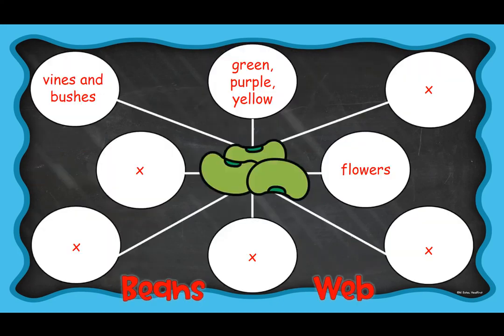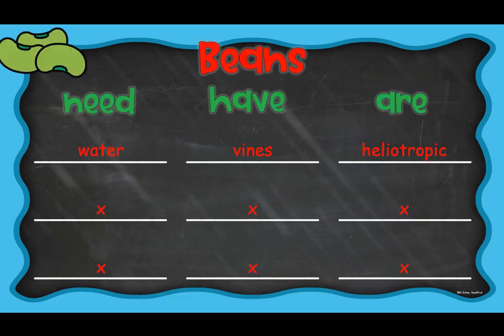There's a web — I just put some examples in there. And then it has beans: need, have, and are. And they can go back and look at those vocabulary words if they need to, and of course the text to help them. This is just a sample of all the things that are in there. There are some more slides that I just didn't include the whole thing.